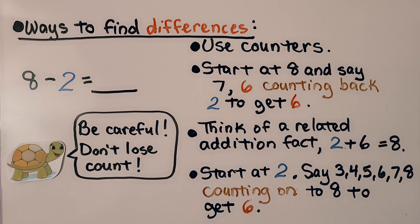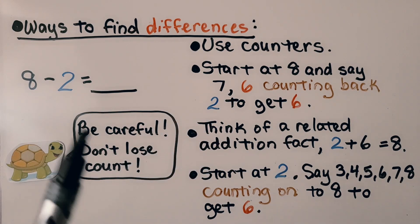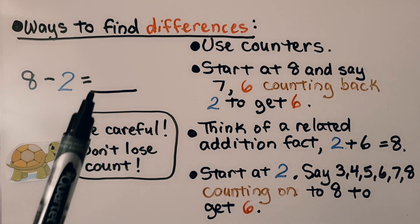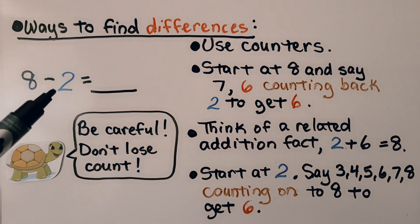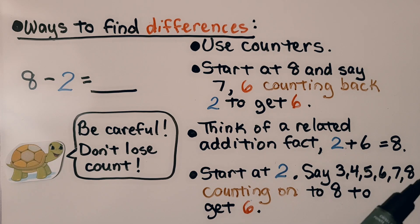So there are different ways to find differences. We have 8 minus 2. We can use counters, or we could start at 8 and say 7, 6 — counting back two numbers to get 6. We could think of a related addition fact: 2 plus 6 is equal to 8, so we need a 6 there. We could also start at 2 and count up to 8 — counting on 6 numbers. But be careful, don't lose count. You might have to do it twice to be sure you've got the right answer.